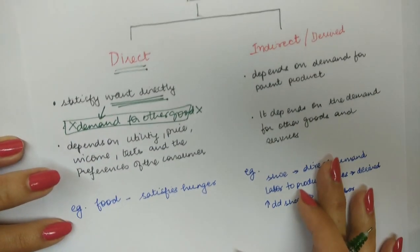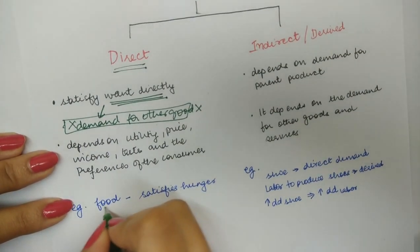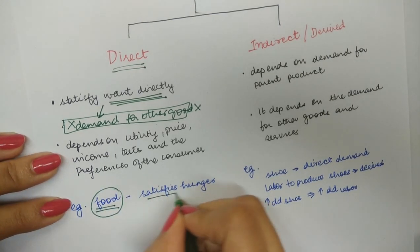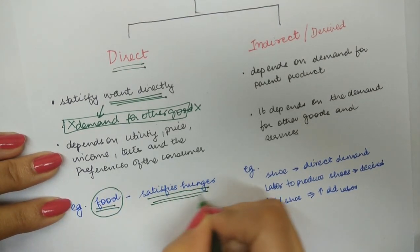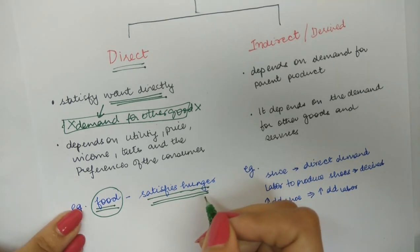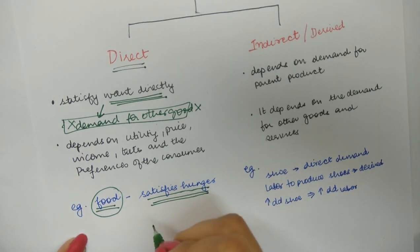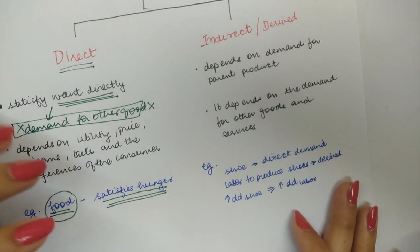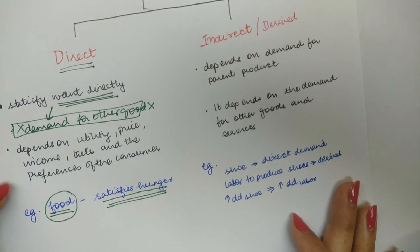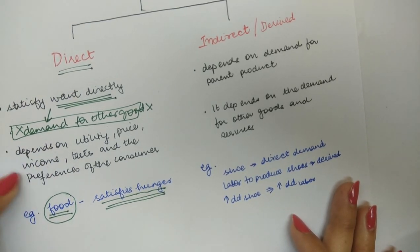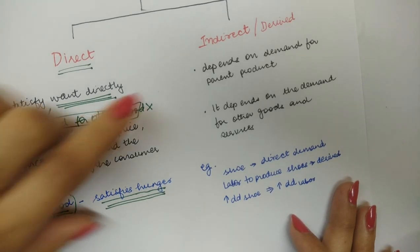For example, when you talk of food, it will satisfy your hunger directly. You demand food, so it is directly satisfying your wants. These kinds of demand satisfy your want directly and do not depend on the demand for any other good.